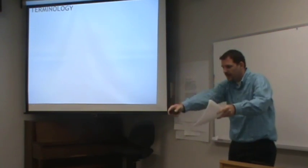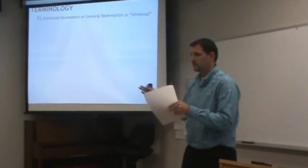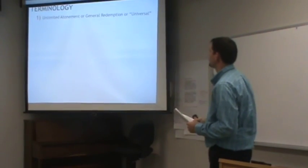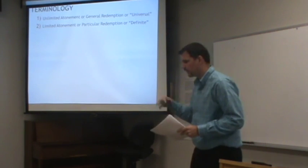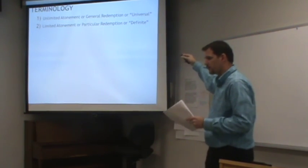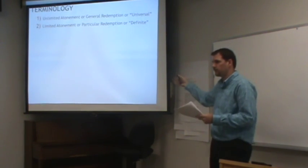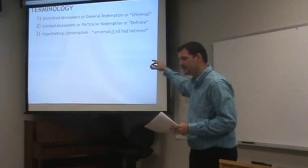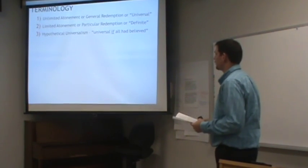Before I dig into what they said, I want to give some terminology. Often this is broken down as limited atonement or unlimited atonement. Unlimited atonement can also be referred to as general redemption or universal atonement — I'll more often use the universal atonement language when referring to Melanchthon's view. Limited atonement is better described as particular redemption, or people will often use the term definite atonement, because 'limited' sounds limiting and isn't as helpful. A third category you need to be aware of is hypothetical universalism.